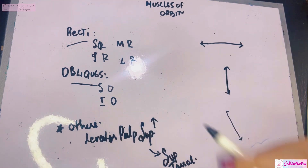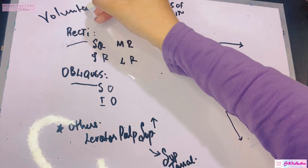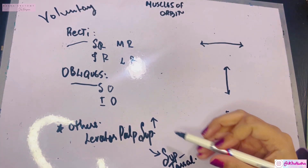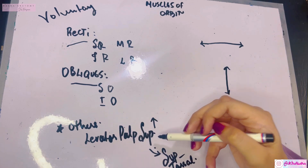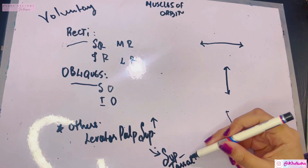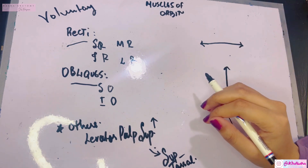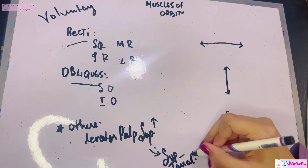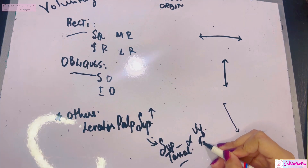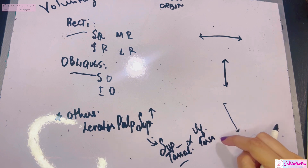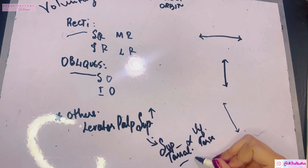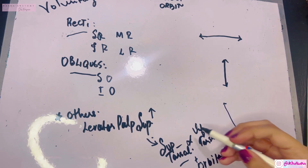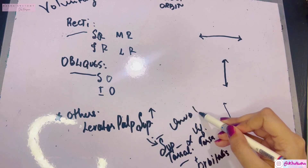The levator palpebrae superioris causes elevation of the upper eyelid. The involuntary muscles are three: the first is the superior tarsal muscle, part of the levator palpebrae superioris, which causes elevation of the upper eyelid. Then we have the inferior tarsal, which may cause depression of the lower eyelid. Finally, the orbitalis muscle has an uncertain action.